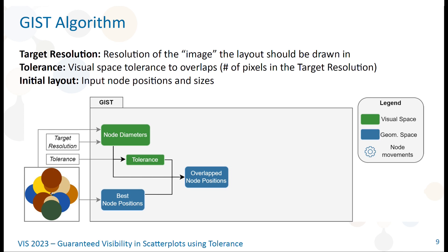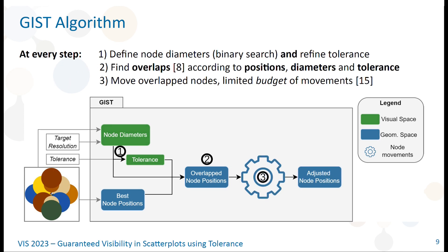It has three inputs: the target resolution of the visual space, the tolerance in that resolution, and the initial node positions in the geometric space. At every step, it searches for the optimal node diameters with a binary search. Its lower bound is one pixel, such that the nodes remain visible, and its upper bound corresponds to the node sizes in the initial layout mapped into the visual space in the target resolution. The tolerance is adapted according to the node diameters in the current step of the binary search to always guarantee their visibility. Then, they are converted into the geometric space and used with the node positions to find those that overlap despite that tolerance. The overlapped nodes are moved to optimize the stress function by stochastic gradient descent for a fixed number of iterations that corresponds to a budget limiting the distortions of the initial layout.